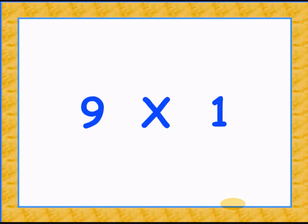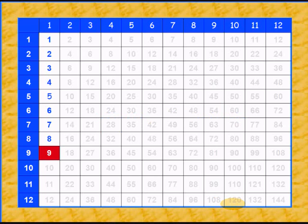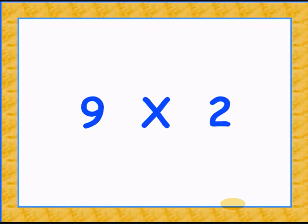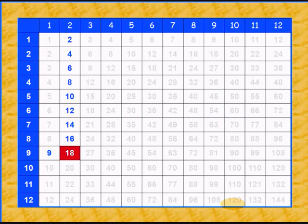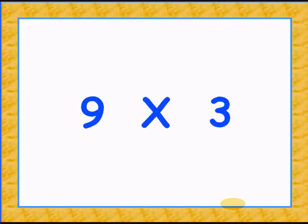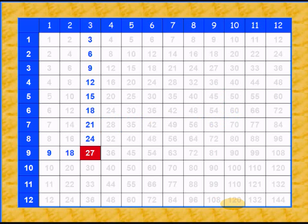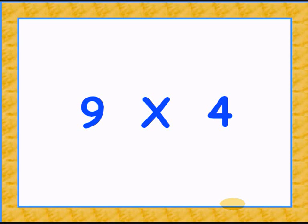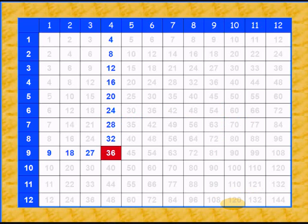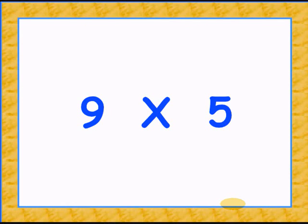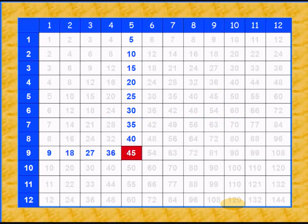9 times 1 is 9. 9 times 2 gives 18. 9 times 3 is 27. 9 times 4 is 36. 9 times 5 is 45.